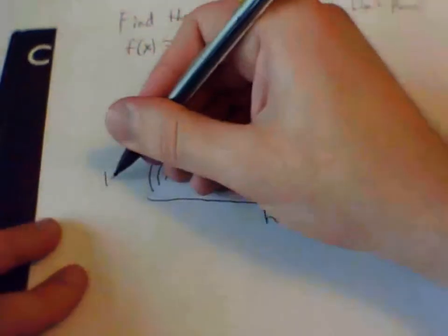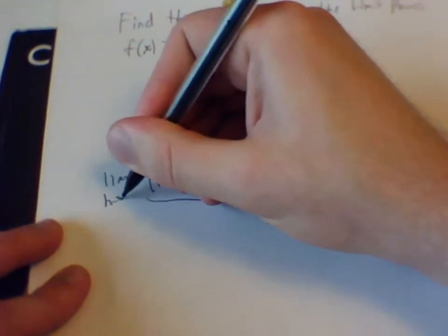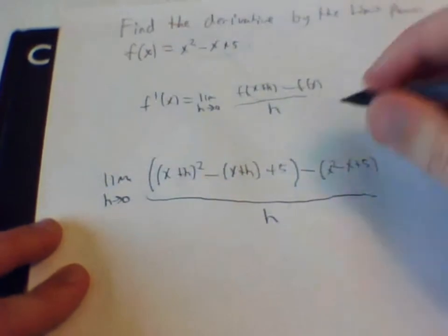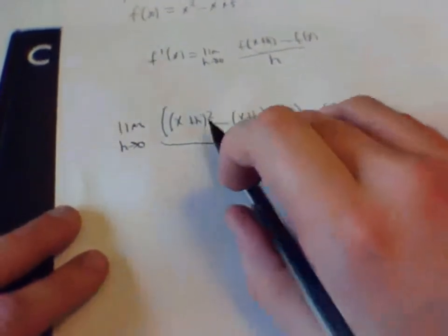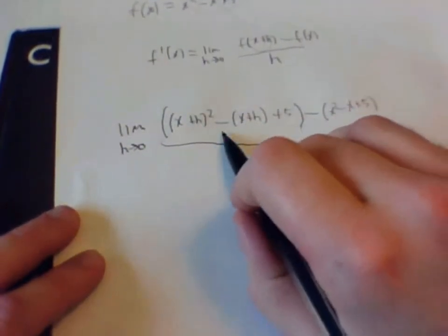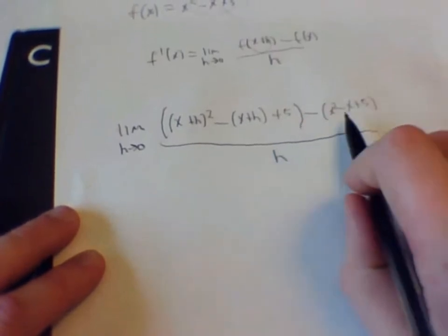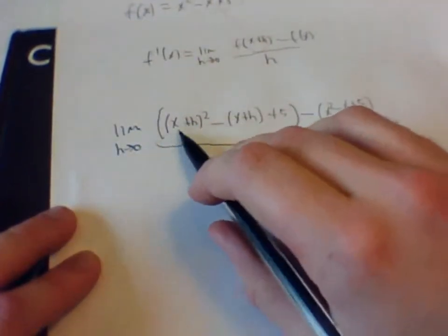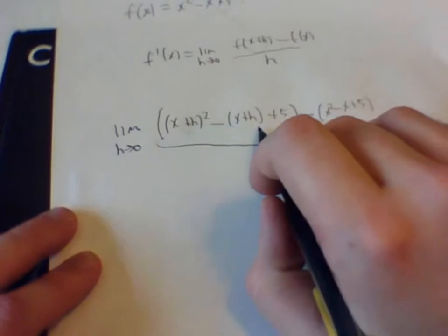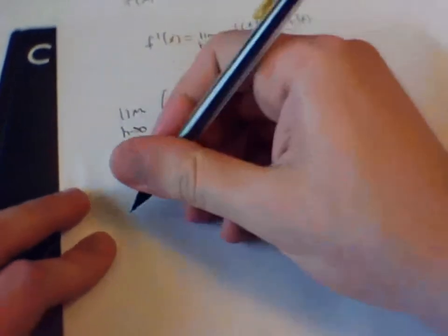This is going to be as the limit of h goes to zero. So now we are going to have to distribute, distribute, foil, factor it out and stuff. So let's do that right here.